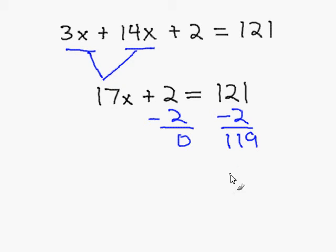I get 119 and now I rewrite my equation: 17x equals 119. Then, I would divide 17 on both sides of the equal sign.